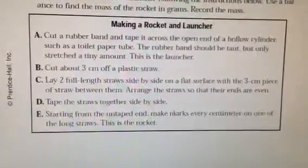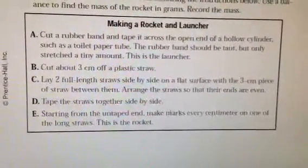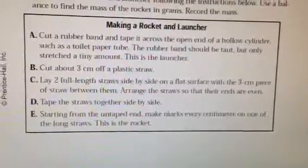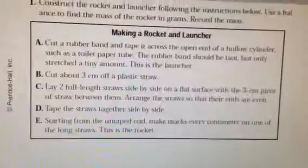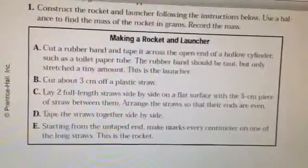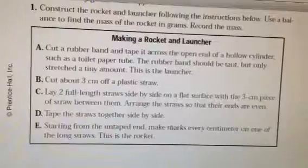Cut about three centimeters off of a plastic straw. Lay two full length straws side by side on a flat surface with the three centimeter piece of straw between them. Arrange the straws so that their ends are even. Tape the straws together side by side.